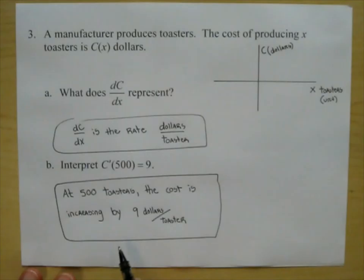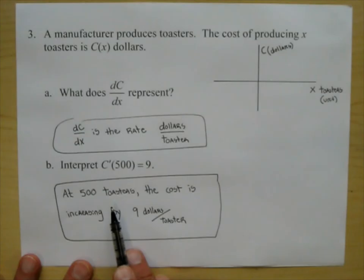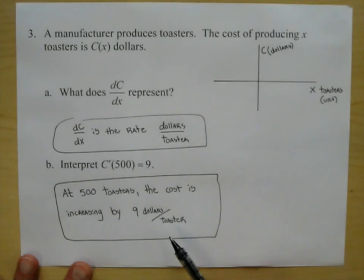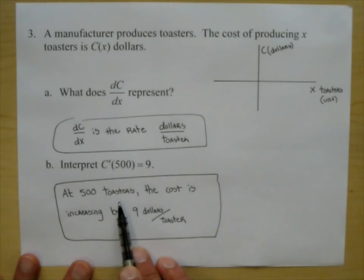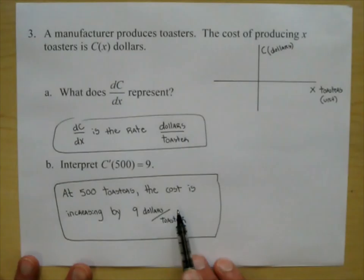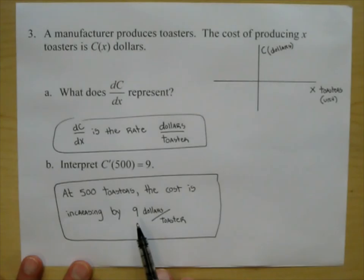In math we don't always love these problems, but they tie things to the real world. If you just wanted to produce 5 toasters, the cost per toaster is probably higher than $9 because you're getting things set up. But by the time you get up to 500 toasters, you have it down — each toaster is increasing cost by $9.